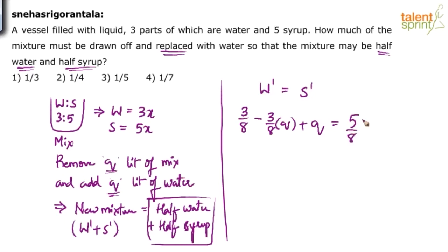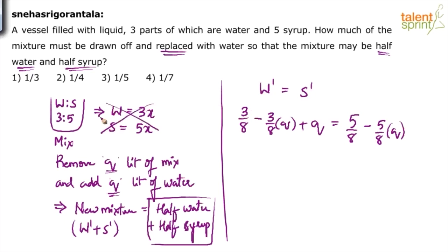Now for syrup: initial syrup was five out of eight parts. We removed q liters of mixture, so five-eighths of q syrup came out. These two expressions — final water and final syrup — are equal. Find the value of q. The initial fractions: water is 3/8 and syrup is 5/8.